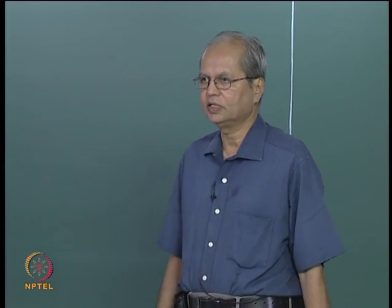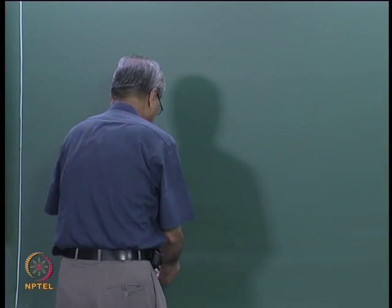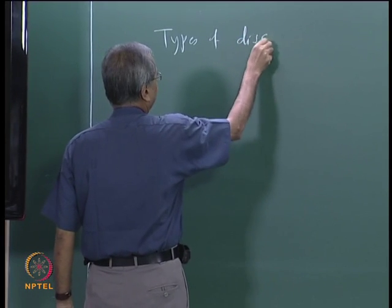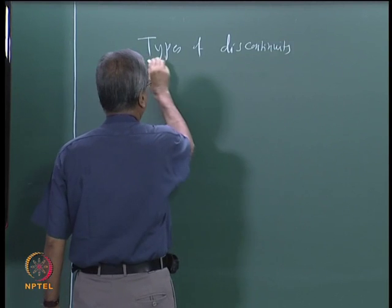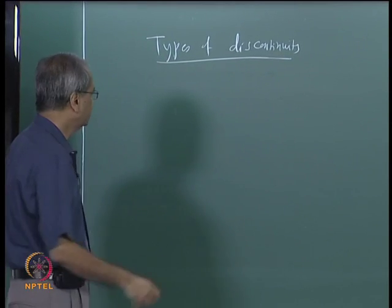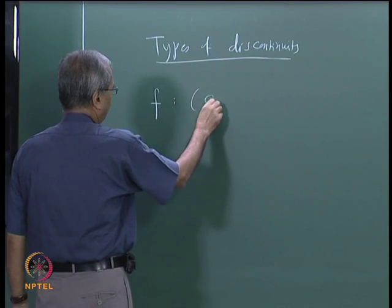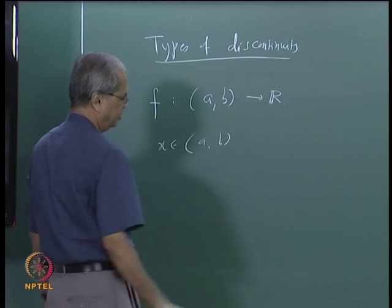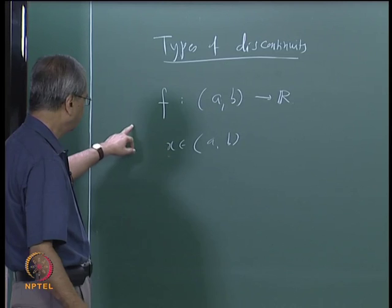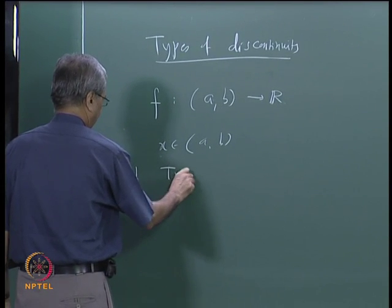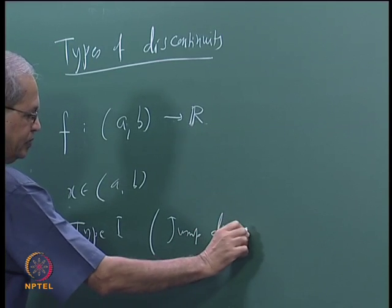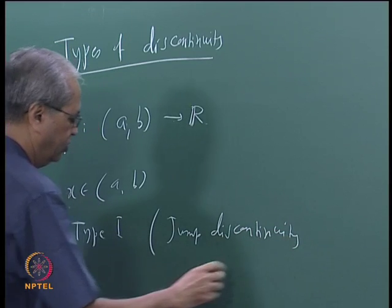We were considering real-valued functions and the types of discontinuity, so we shall continue with that discussion. Let us recall: for a function f defined on an open interval (a,b) to R, and x some element of (a,b), we say x is a discontinuity of Type 1 — another name is jump discontinuity, or also called simple discontinuity.